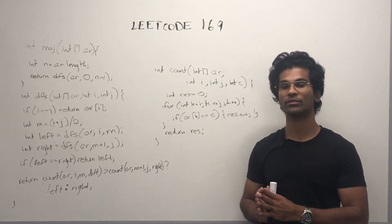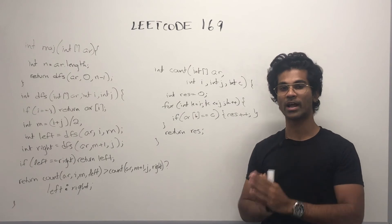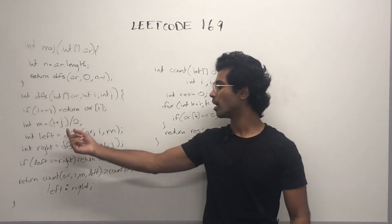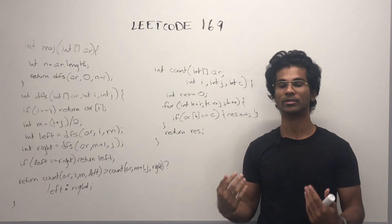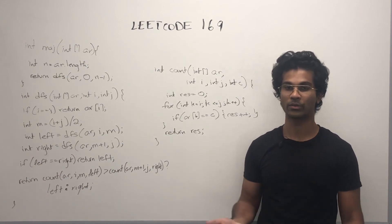Otherwise, we recursively find the left and right halves by taking the midpoint, i plus j by two. And if the answers they return are the same, we simply return.